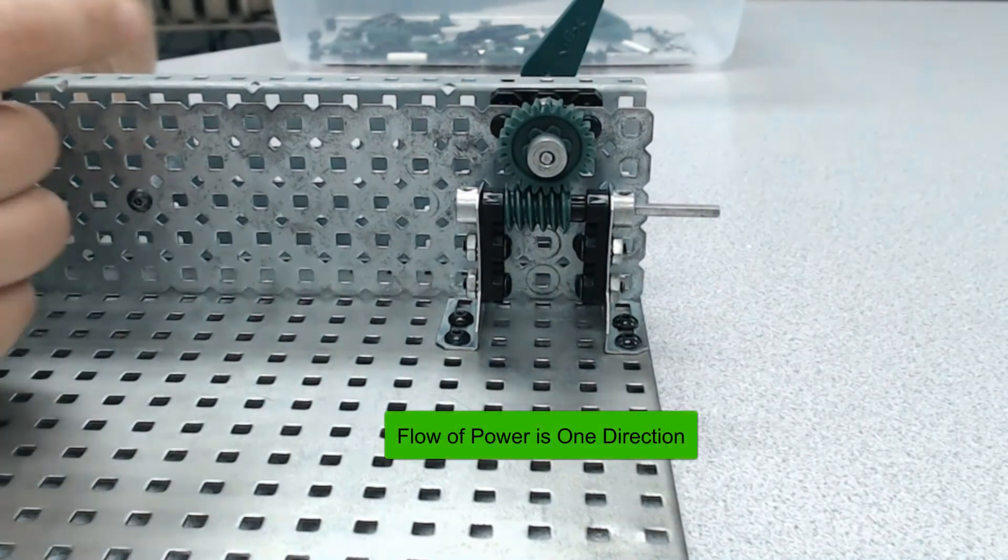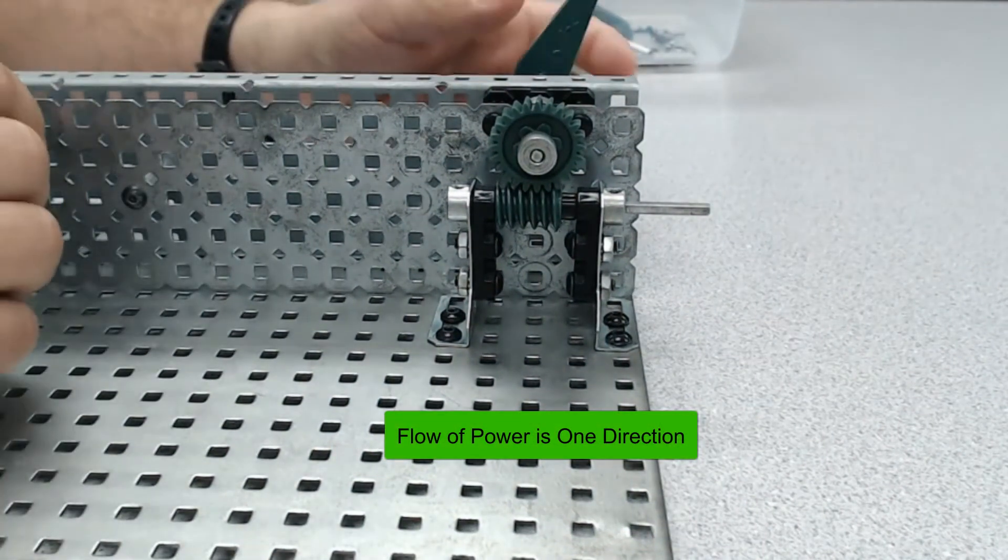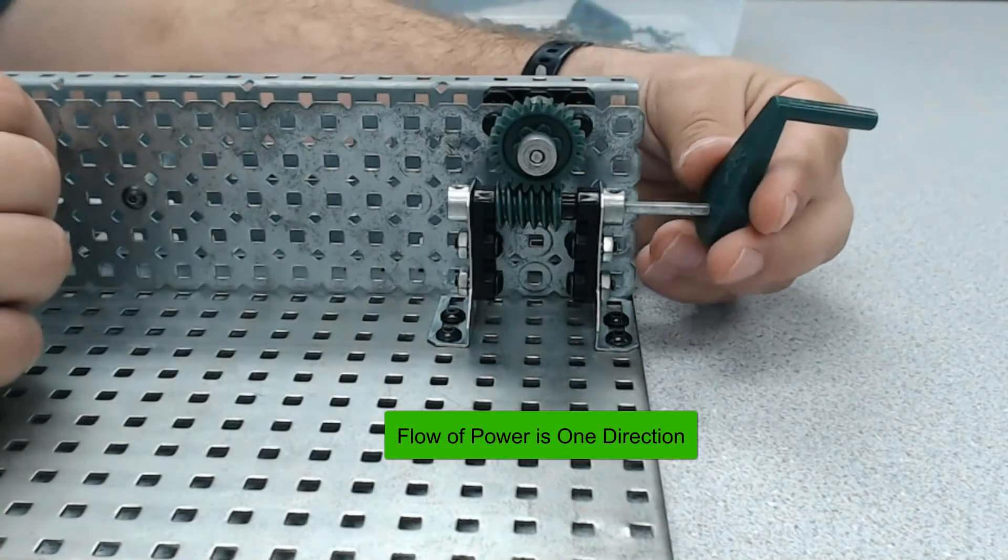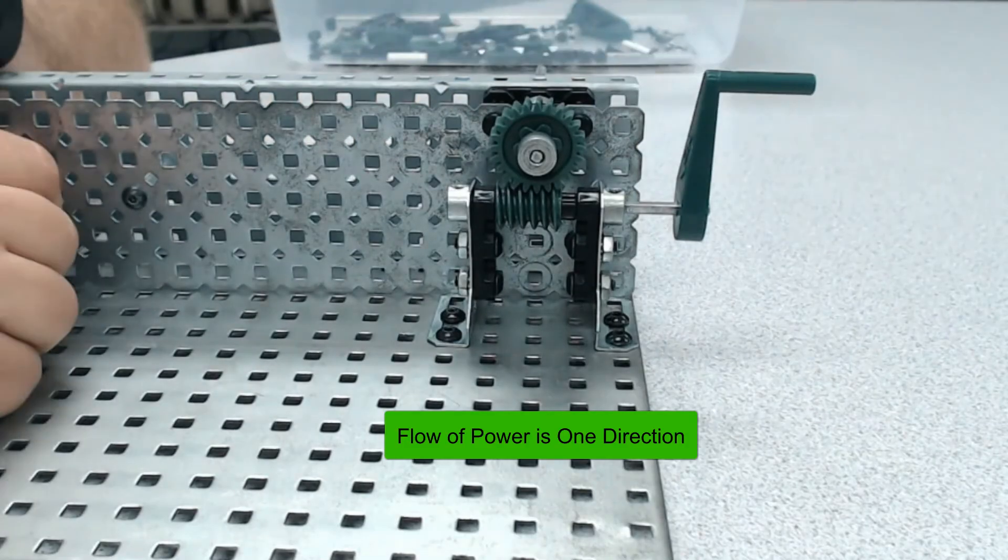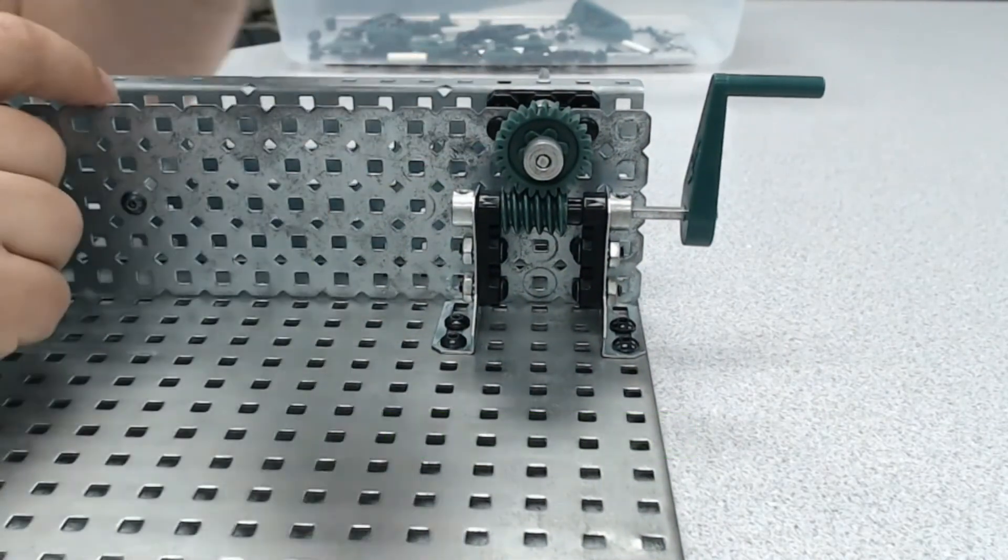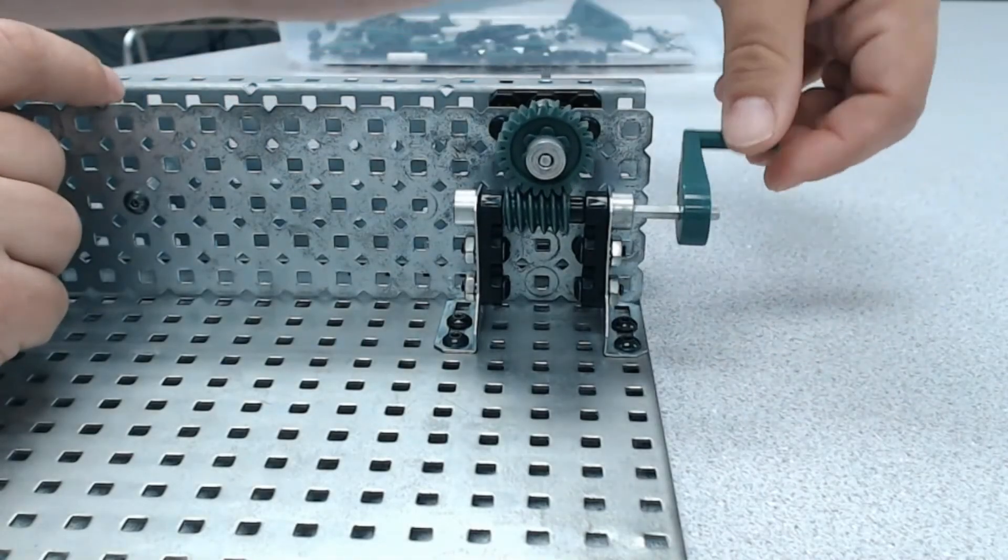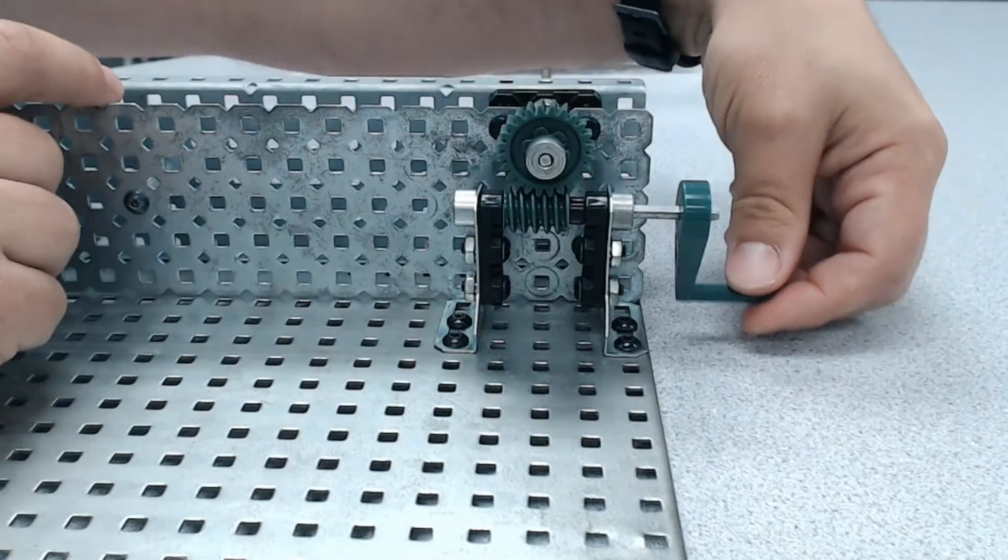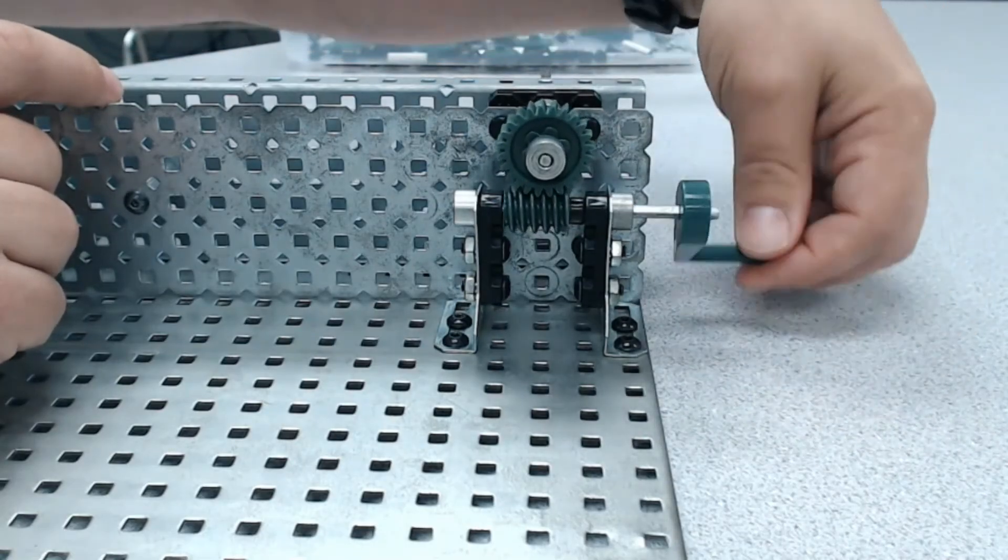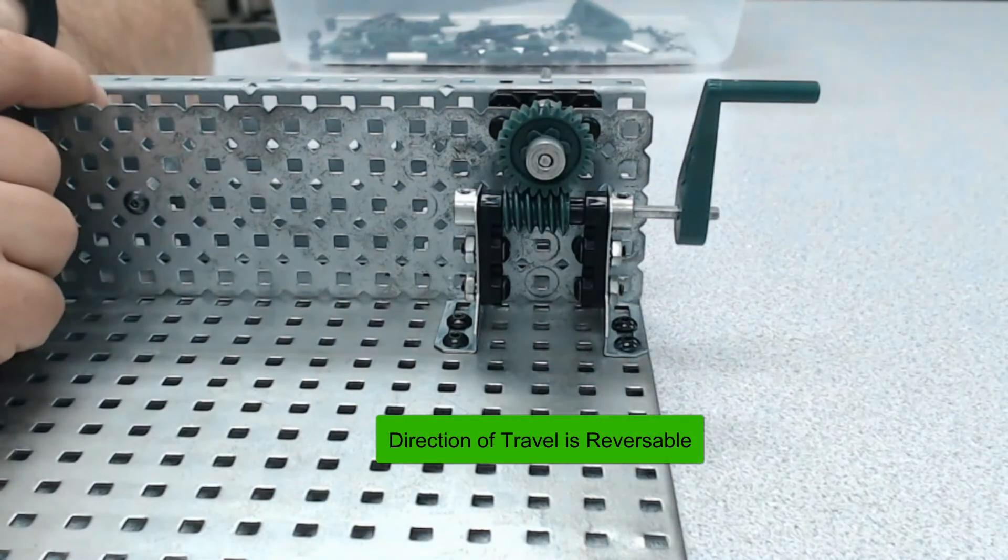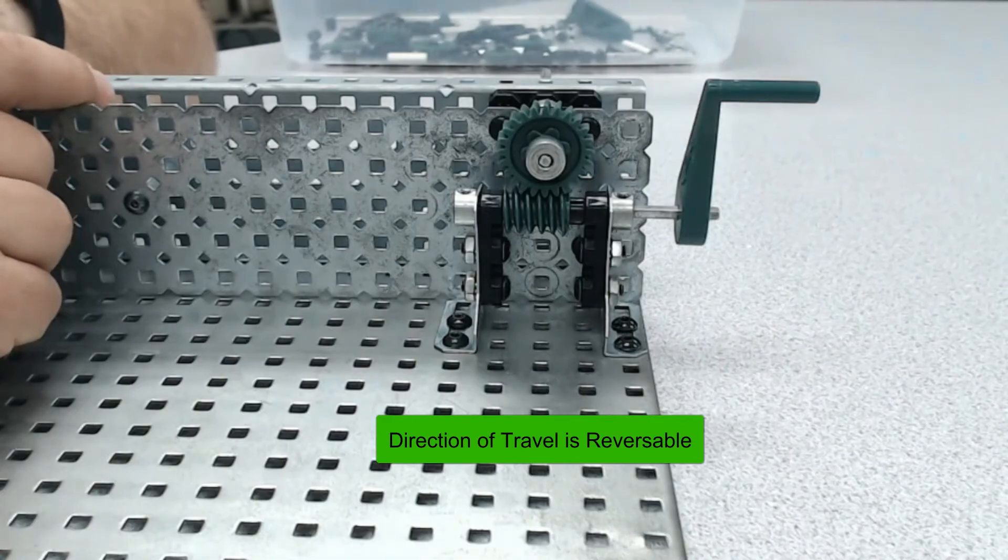You may notice that I can't turn it at all, which means that this gear does not have a reversible flow of power. However, what about the direction of travel? Well, I can go this way, or I can go this way. So this gear does have a reversible direction of travel, just not a reversible flow of power.